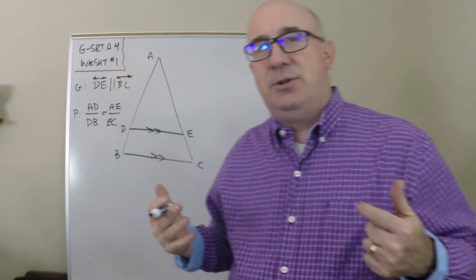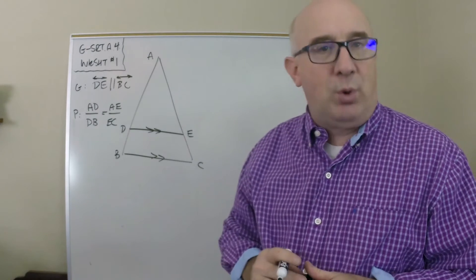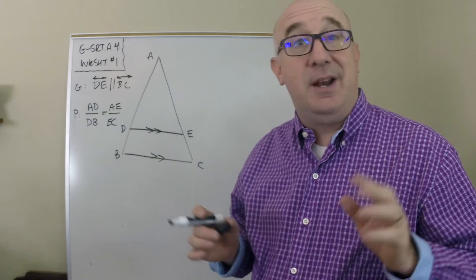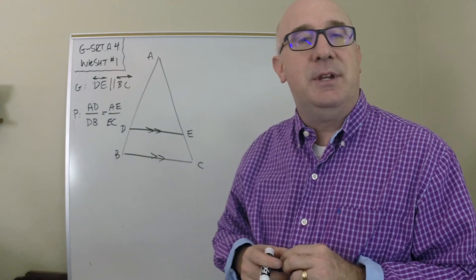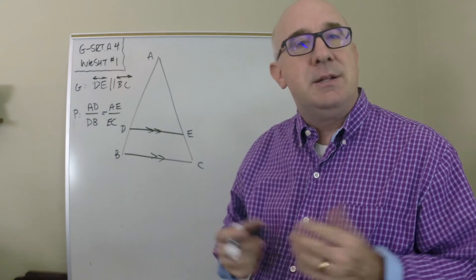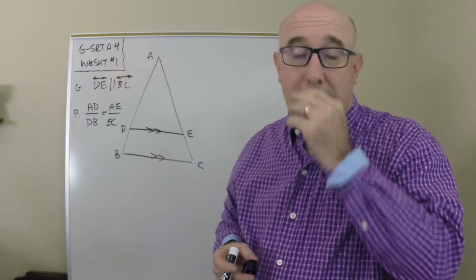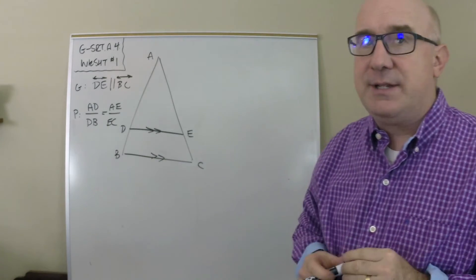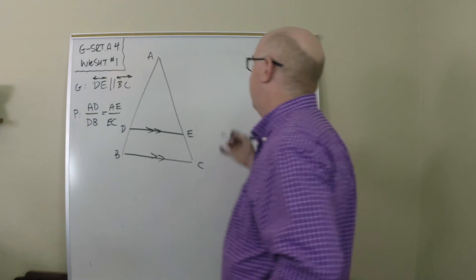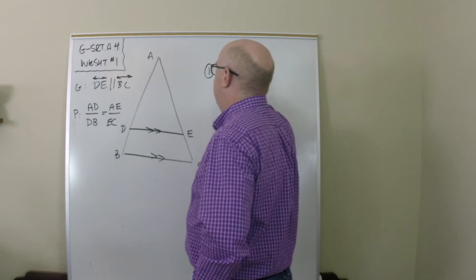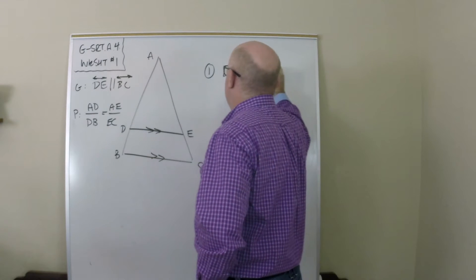Anytime you are trying to establish proportions, I guarantee it has something to do with similarity. Similarity is all about proportions. I'm not going to write all of this out, but I'm going to give you the basic idea that the first thing you want to do is prove that triangle ABC is similar to triangle ADE.